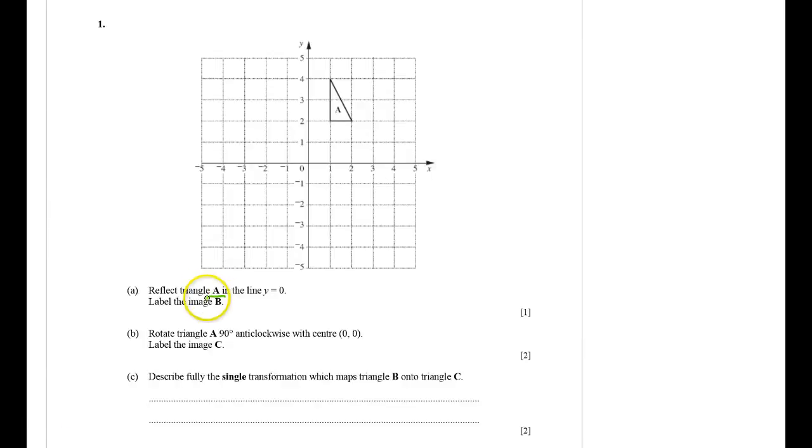Okay, I've got to reflect triangle A in the line y equals 0. So let's just see what that line looks like. Always do these things. x is 0, y is 0. x is 1. Well, y is always 0. That's what y equals 0 means.